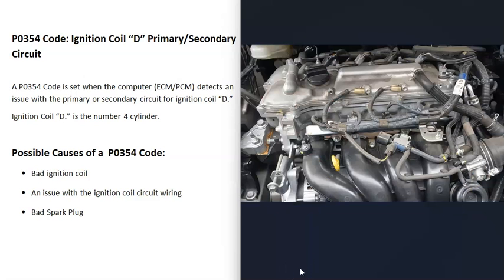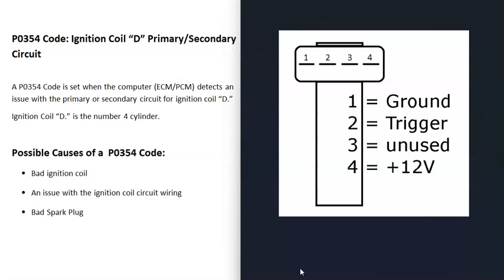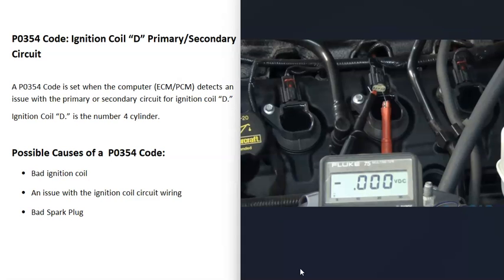If that ignition coil tests good and there's no issues there, then the next thing that could cause this problem is that there's some kind of issue going on inside the wiring going to the ignition coils. This would be something like an open, short, or bad connection. You will need to get schematics for your particular vehicle to know for sure what's going on inside that wiring so you can test it. You can use a multimeter and do different tests on it. There's some good YouTube videos on that.